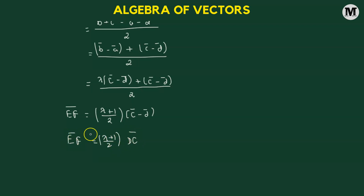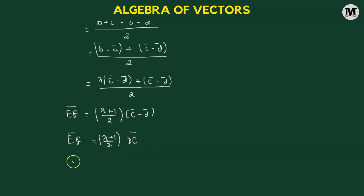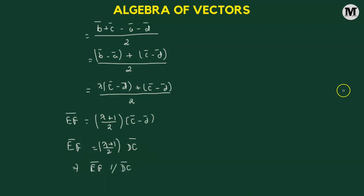We have found that EF vector equals a scalar — specifically (λ + 1)/2 — times DC vector. This tells us that EF vector is parallel to DC vector.